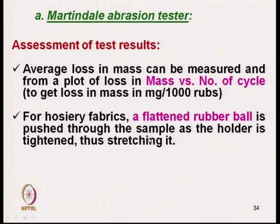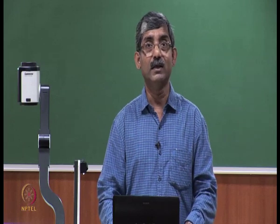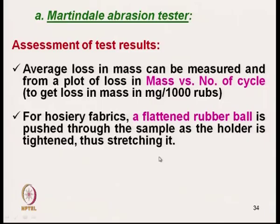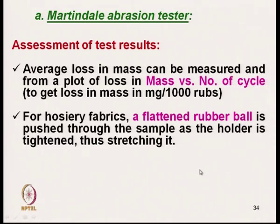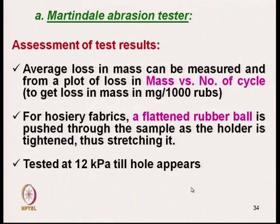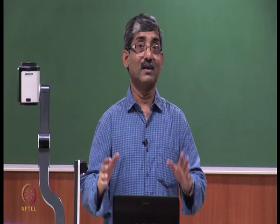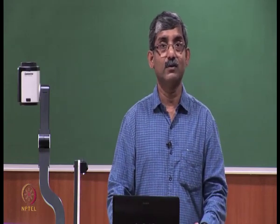For hosiery fabric, due to the extensibility and loose structure of knitted fabric, yarns move relatively during testing, giving artificially higher abrasion cycles. To increase test severity, a flattened rubber ball is inserted through the same sample holder, stretching the specimen, and the test is conducted under 200 kPa pressure until a hole appears. Without this modification, the testing cycle would be very high due to lateral movement of the knit structure.